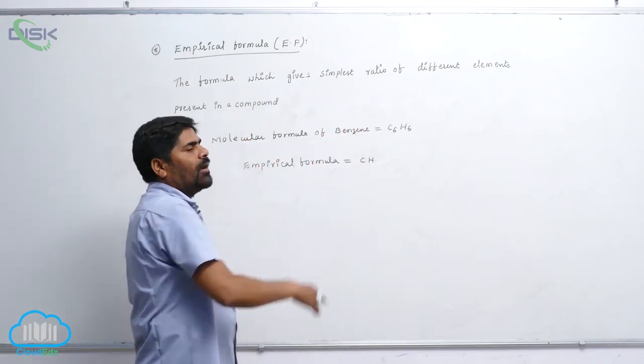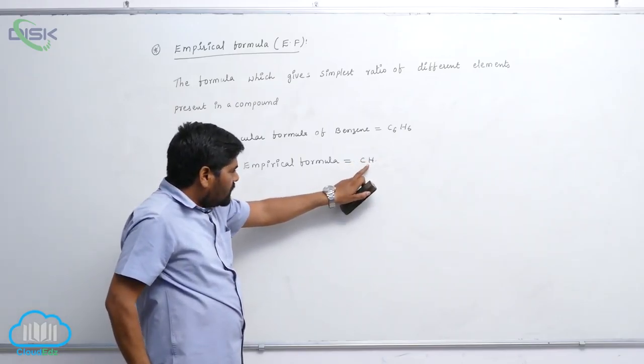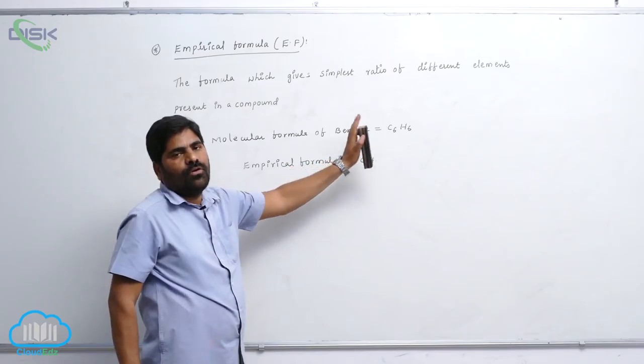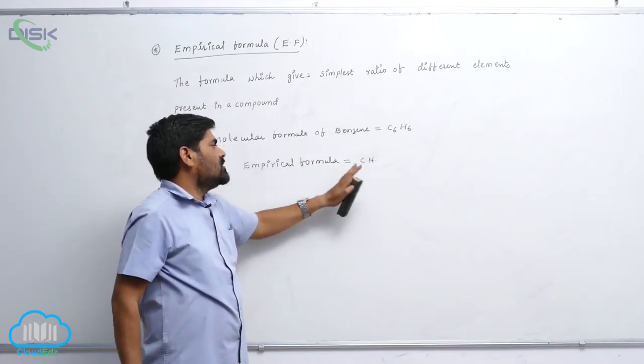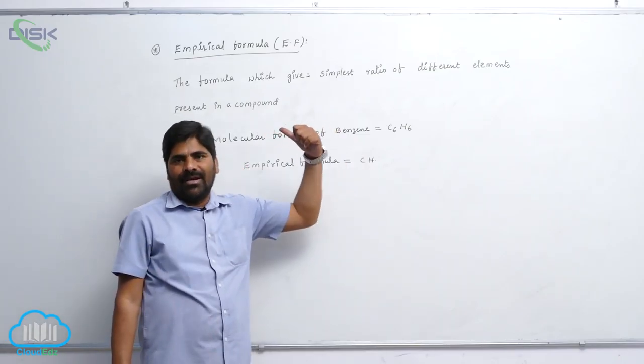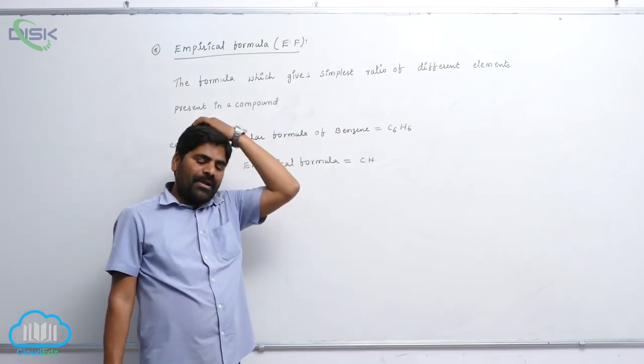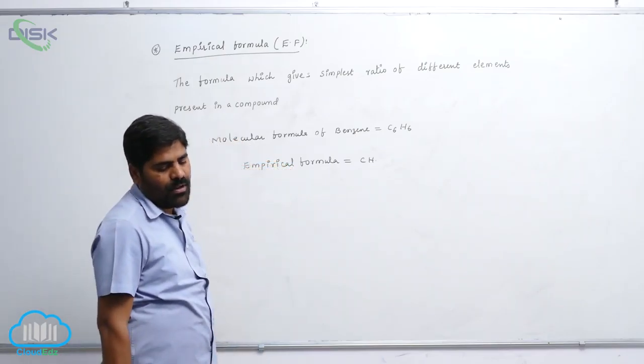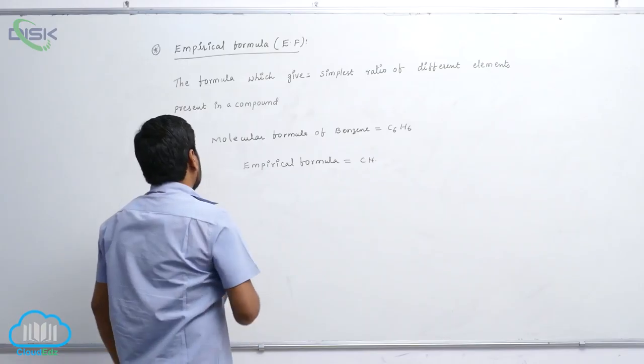So when multiplied with a whole number, you get which one? This one. So without whole number, just the simplest ratio of all the elements present in a compound is known as empirical formula. This is the first one.